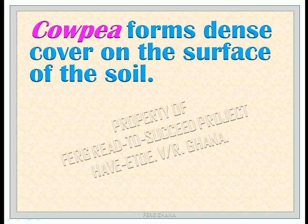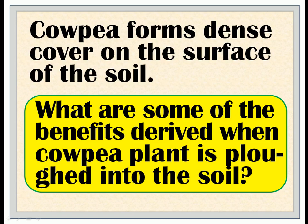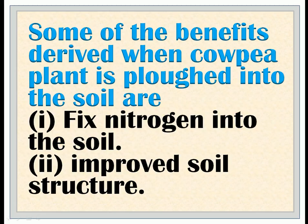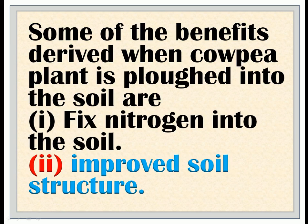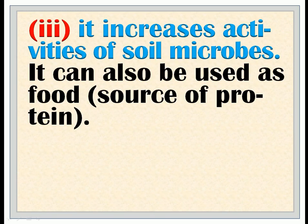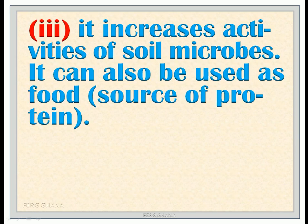Cowpea forms a dense cover on the surface of the soil. The benefits derived when cowpea plant is ploughed into the soil are: 1. Fix nitrogen into the soil; 2. Improved soil structure; 3. Increases activities of soil microbes. It can also be used as a food source of protein.